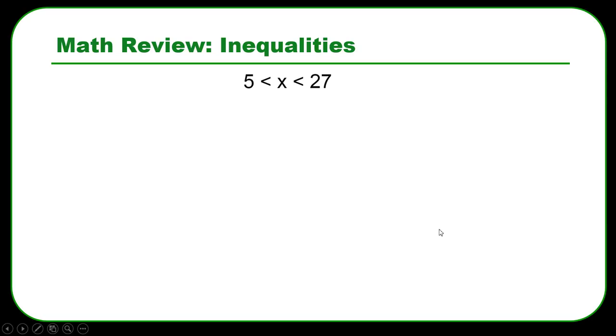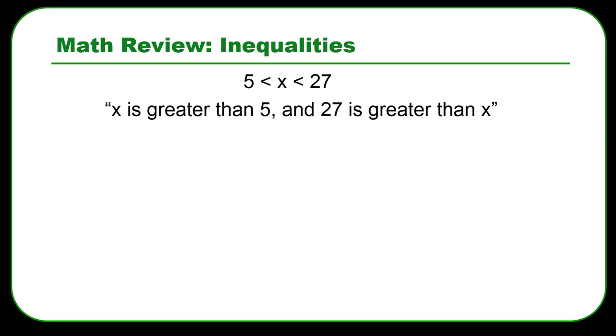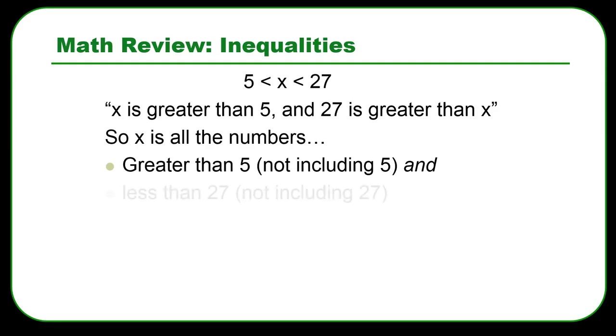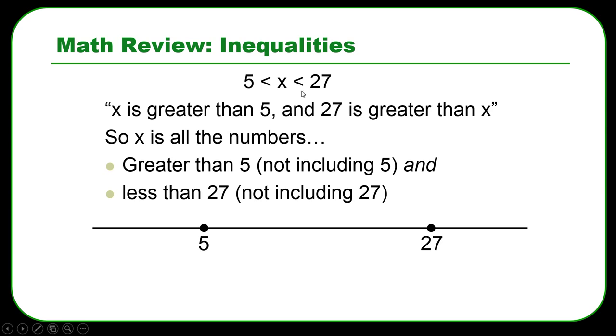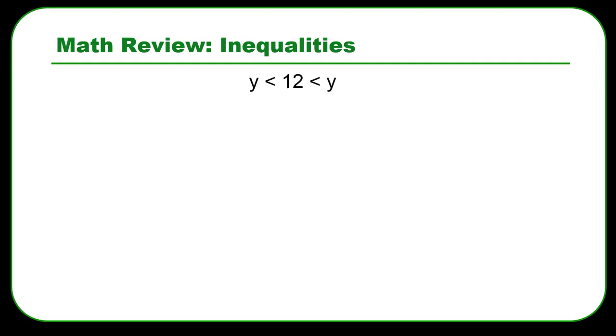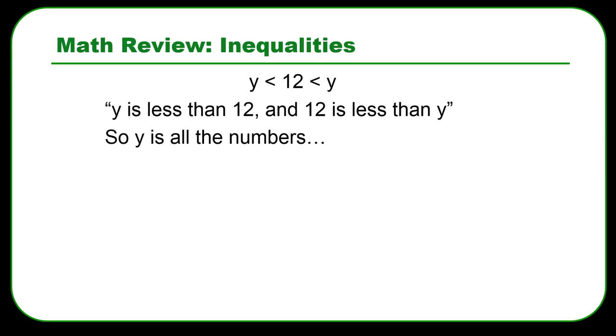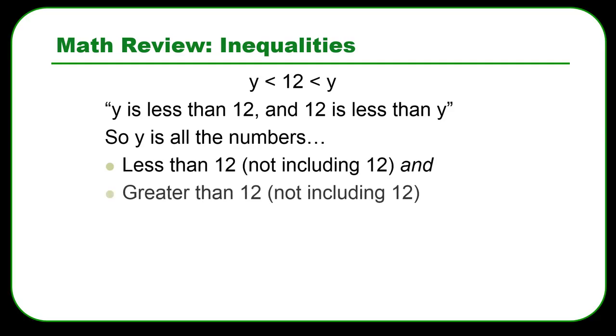So inequalities will come up later in the semester, maybe one time. It's not going to be a huge focus, but it might be handy to know this as we get there. We sometimes need to talk about a value that represents a range of numbers between two other numbers. So in this case, x represents all the numbers between 5 and 27. So greater than 5, less than 27. But because we have regular less than signs here, not less than or equal to signs, then x represents everything not including the 5 or the 27. So I made my little brackets here go inside the 5 and 27. I know there's a standardized way to do this with the dots and circles and stuff, but I didn't do that because the graphics were super annoying in PowerPoint. So I'm using a little bracket system here. So here's another one where the variable is on the outside of the range, not the inside of the range. So y is less than 12 and 12 is less than y. So y is all the numbers that are not 12, essentially. Less than 12, not including 12, greater than 12. So it's everything that's not 12.